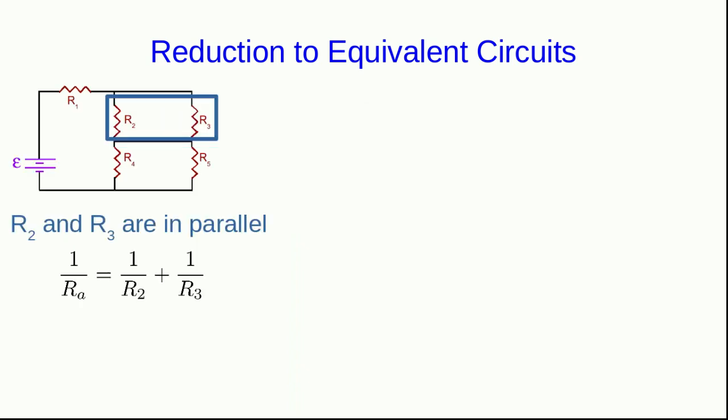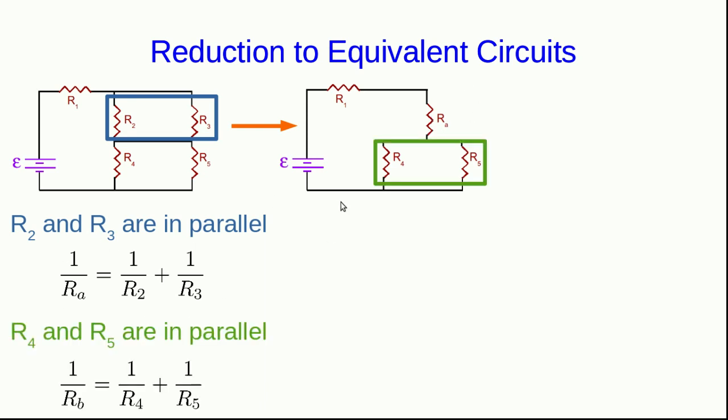Let's see how we would do that. We might start by noting that R2 and R3 are in parallel, and the law for equivalent resistances in parallel tells us that we can reduce them to a single resistance RA using this rule.